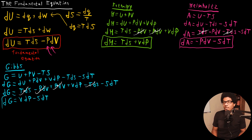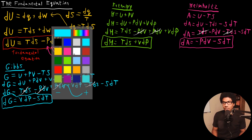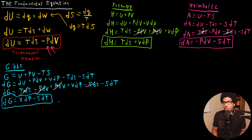So these are all of our thermodynamic potentials re-expressed in terms of the fundamental equations. The reason why these are so fundamental is that we can look at what power this truly gives us. The best example of that is if we look at the Gibbs energy. Starting with the Gibbs differential, dG = VdP - SdT.